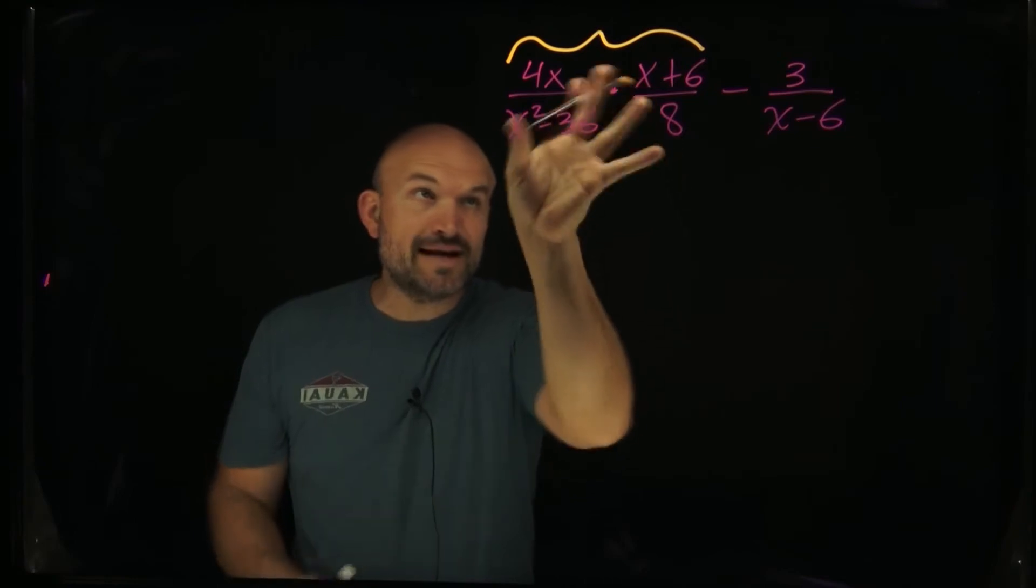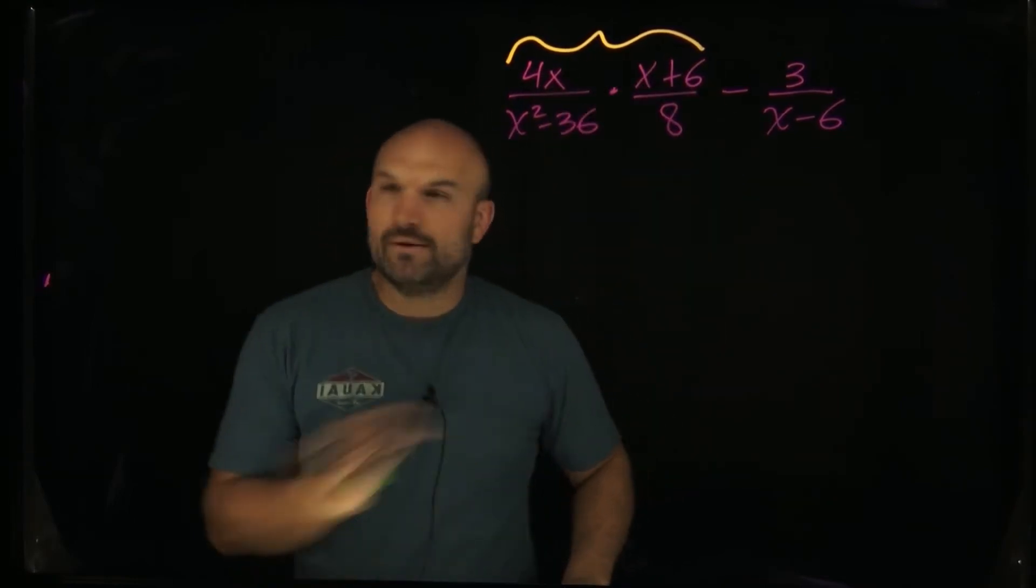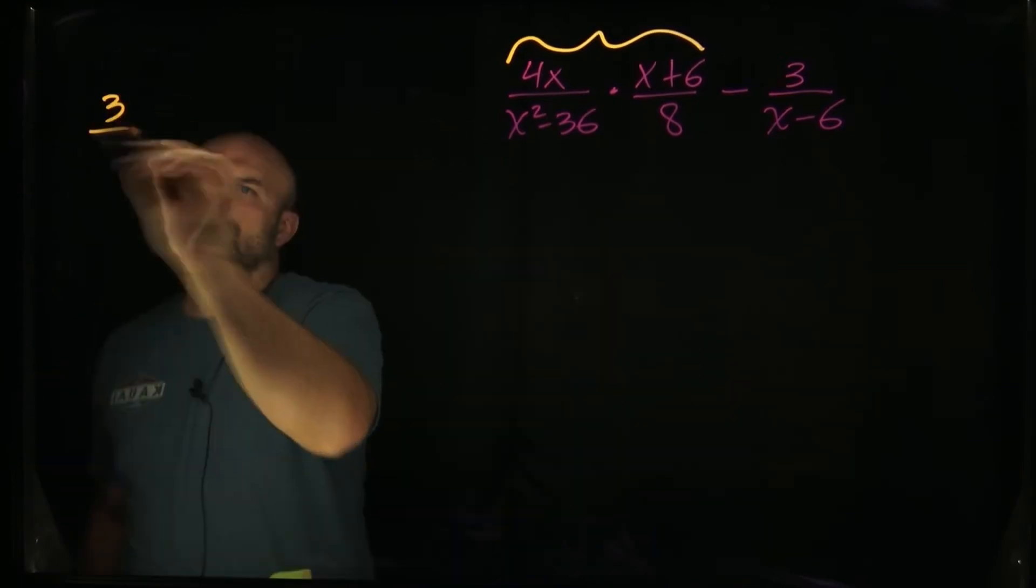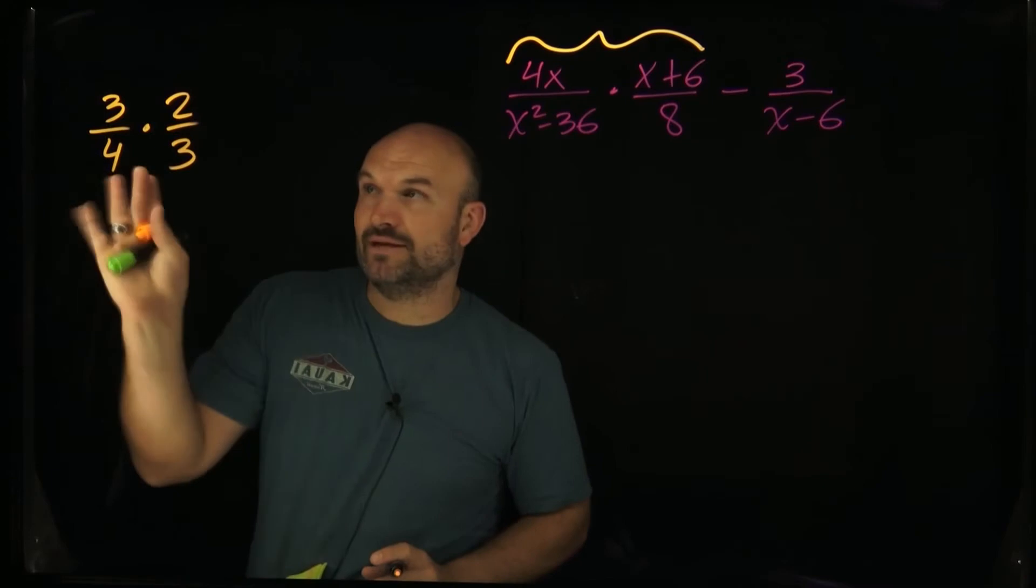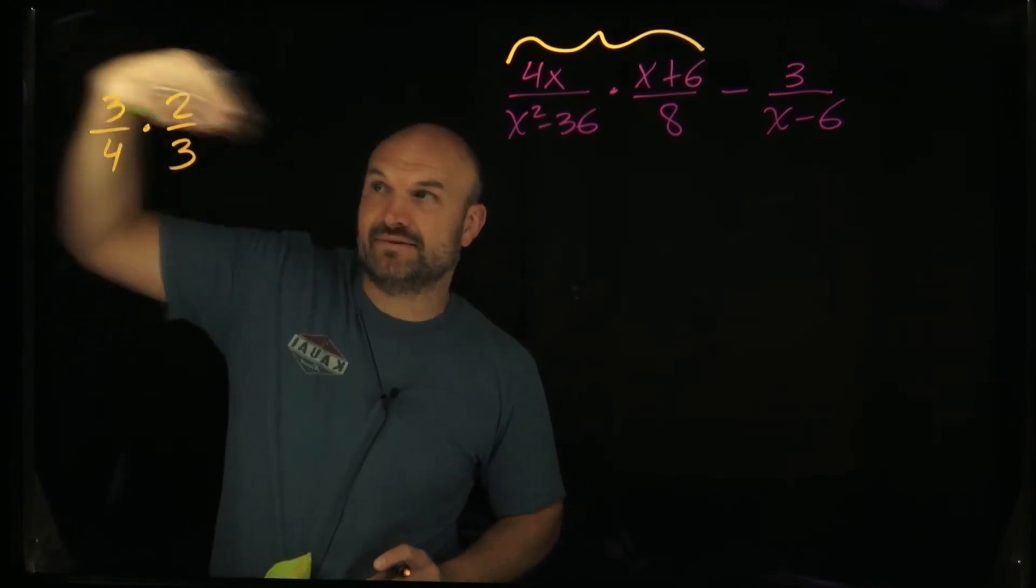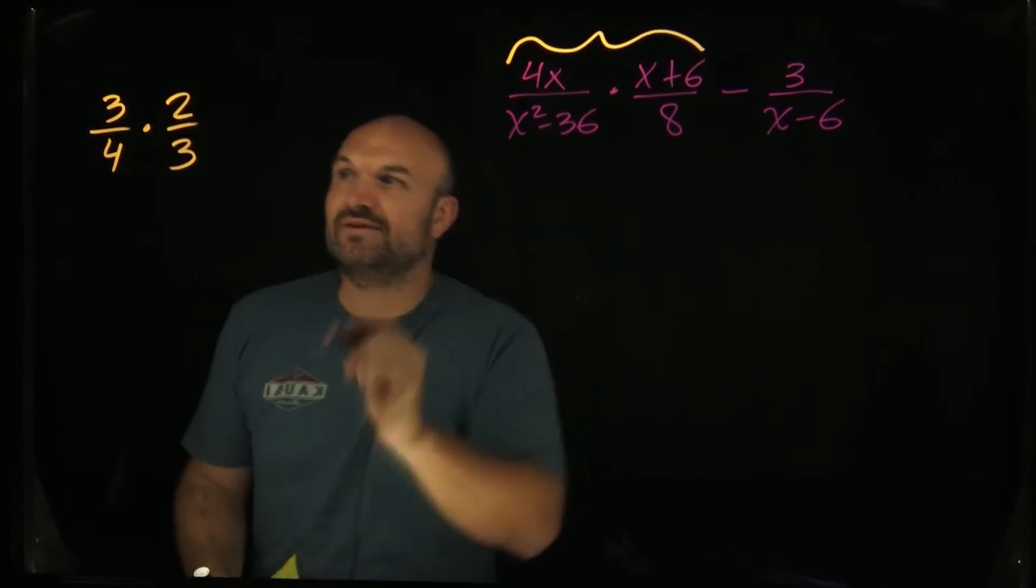So I'm going to focus right now on multiplying fractions. If you forgot how to multiply rational expressions, just think of numbers. When we're multiplying fractions with numbers, we just multiply numerator times numerator, denominator times denominator. We don't care about the common denominator. That's why a lot of students love multiplying fractions.